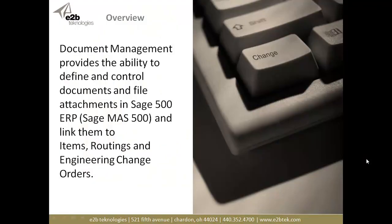An overview. The product we're talking about today is document management, and what it does is provide the ability to define and control documents and other file attachments within Sage 500 ERP — formally Sage MAS 500 — and link them to item records, manufacturing routings and bills of material, as well as engineering change orders.